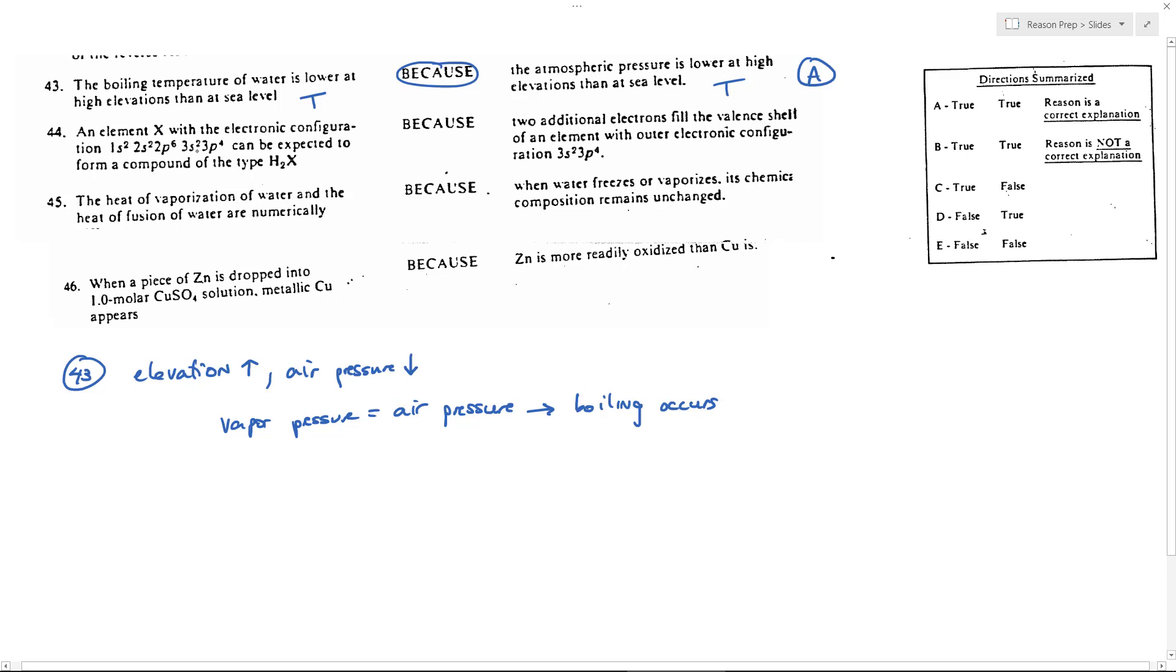We've got an element X. Can we expect it to form the compound H2X? We look at its configuration and see that we can actually find the exact element. If we look in the table: 2, 4, 10, 12, 16 electrons - that corresponds to sulfur, which makes sense because sulfur has two electrons short of a full shell, as is this 3p4.